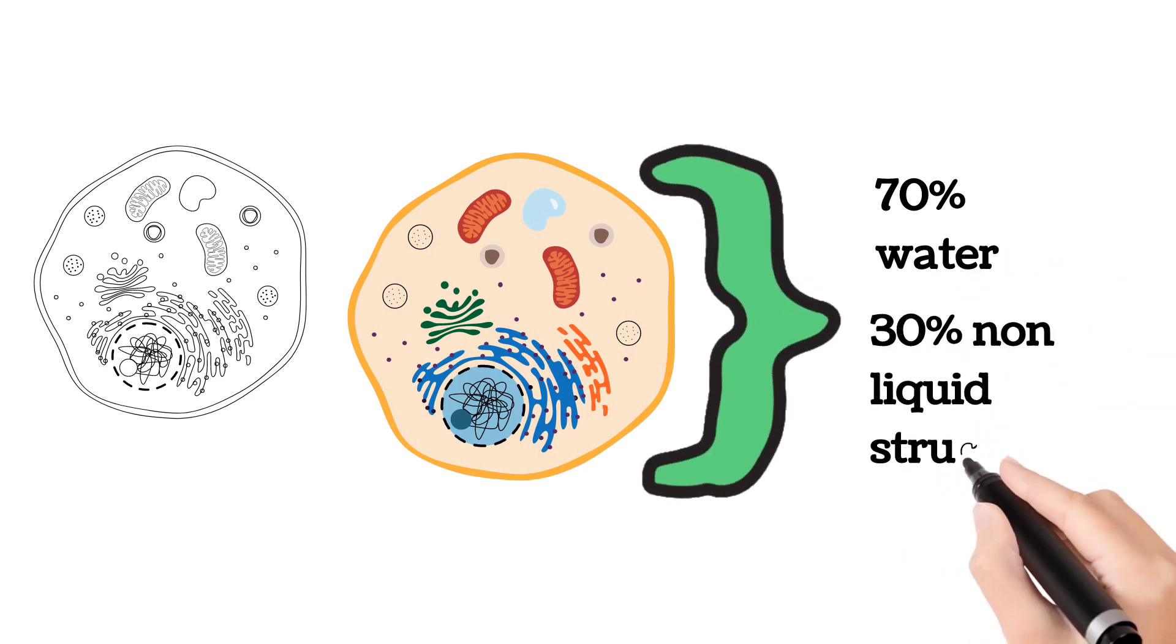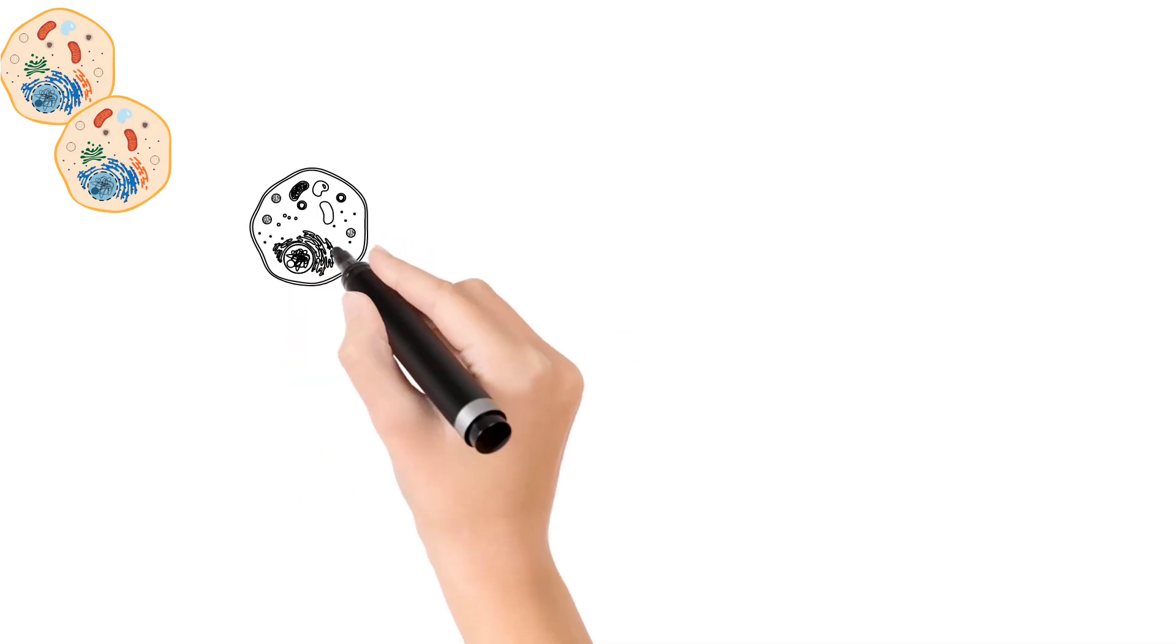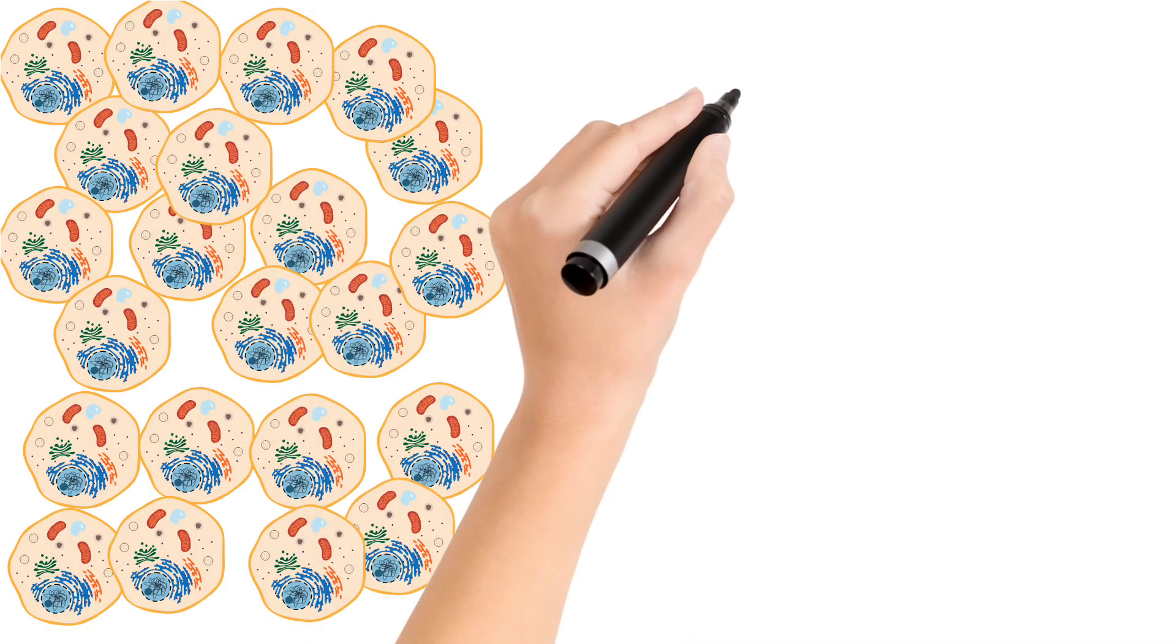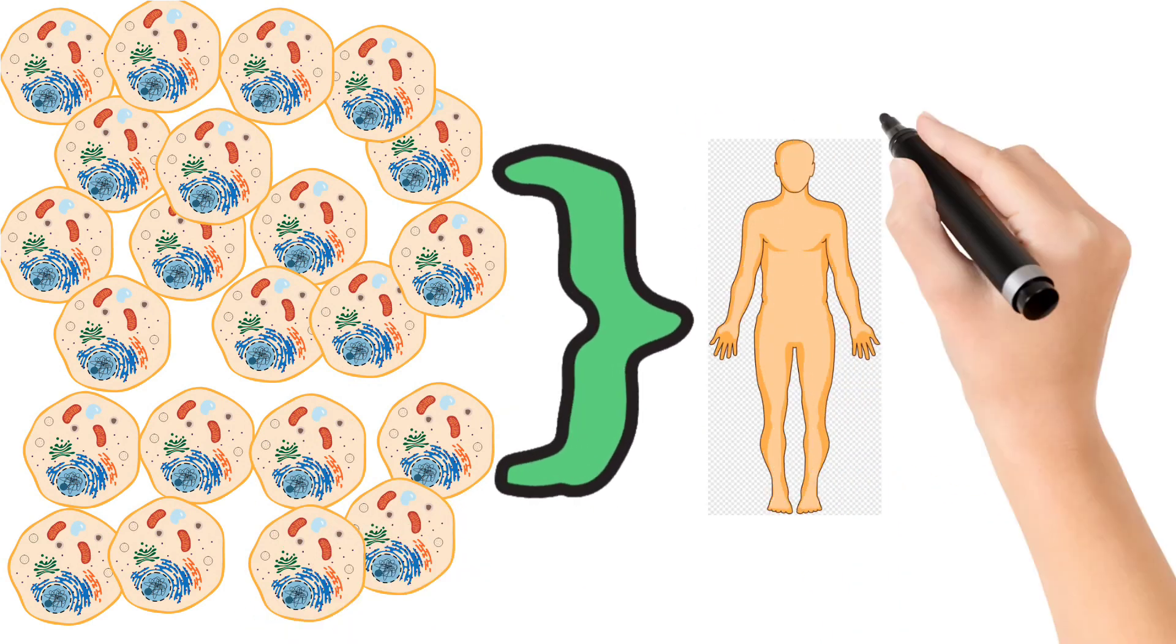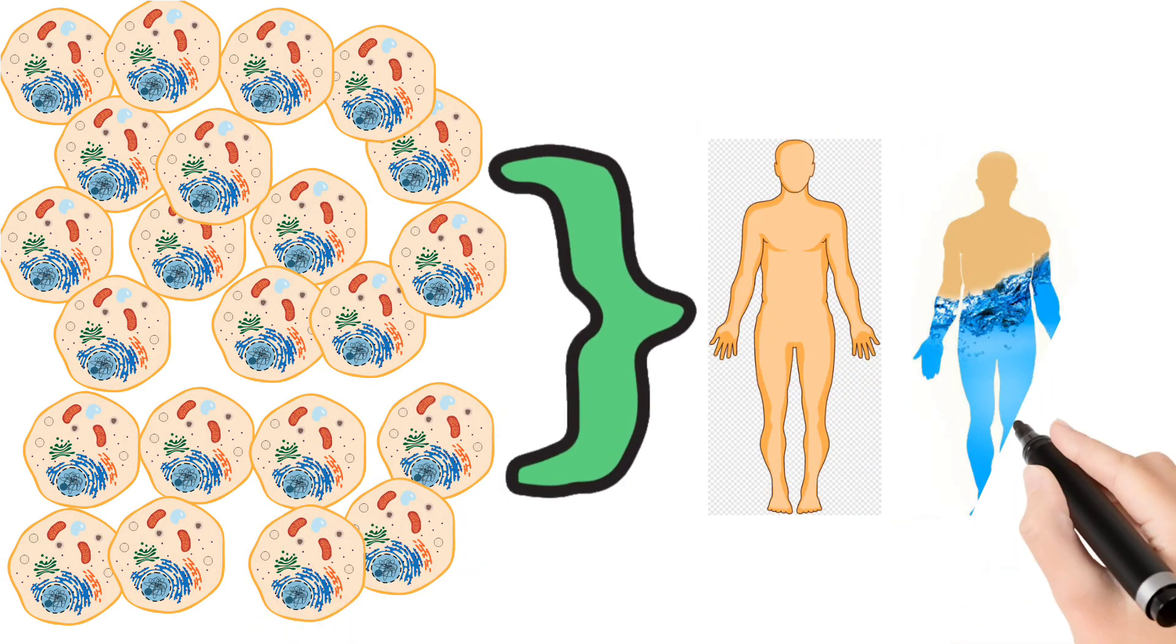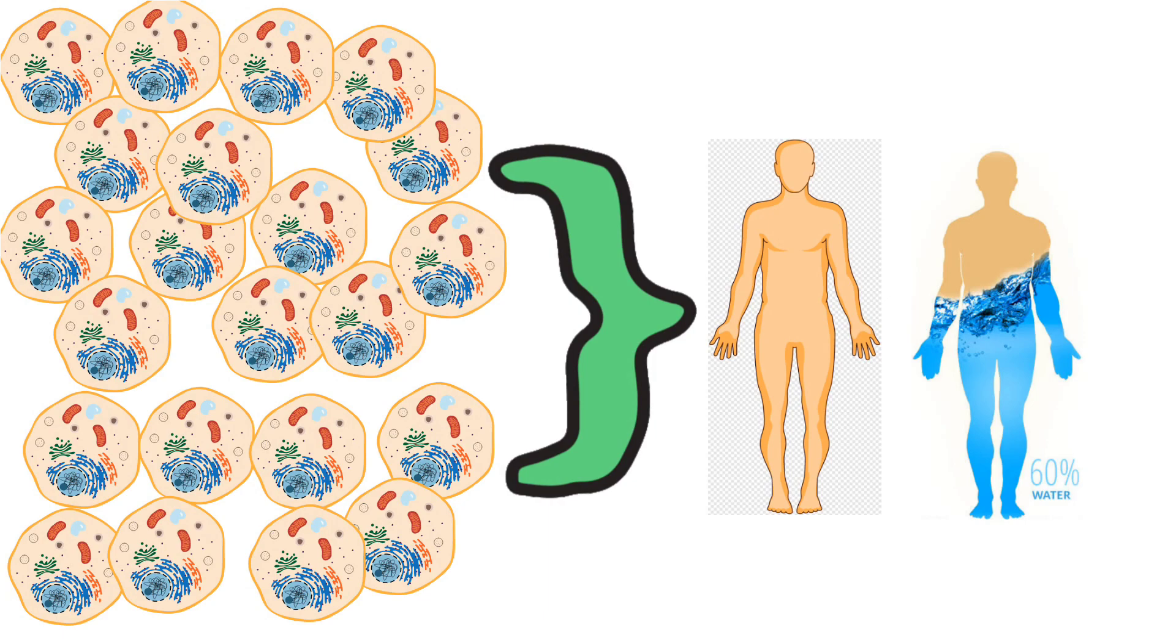This means only 30 percent of solid structure is present in the cell. Now imagine trillions of cells like these coming together to form a body, and you see the structure which looks like a solid mass actually has a lot of water inside it.